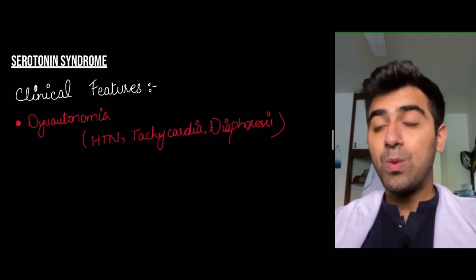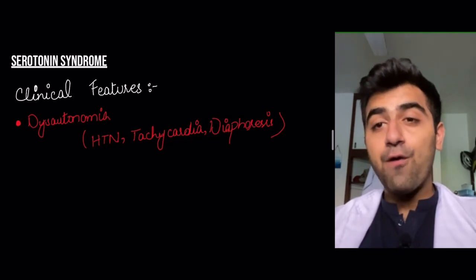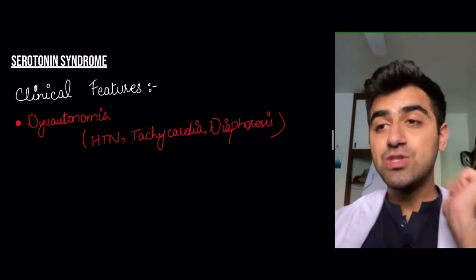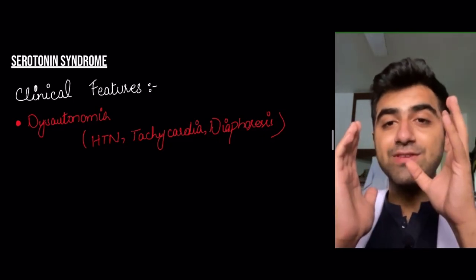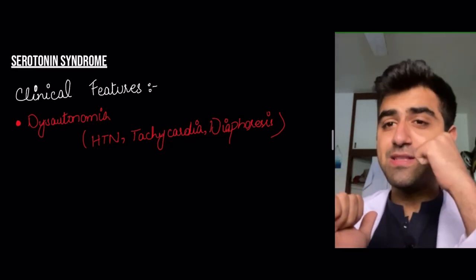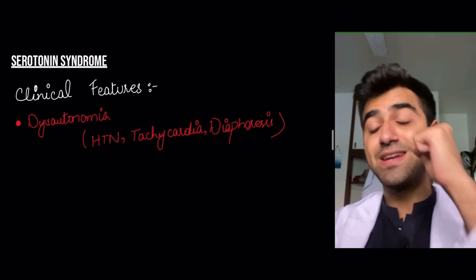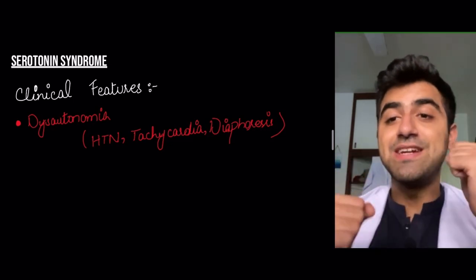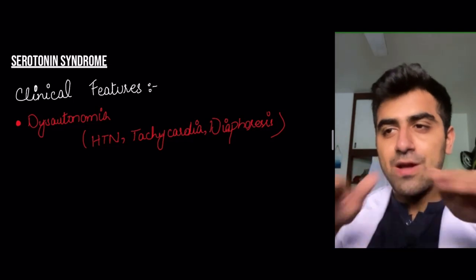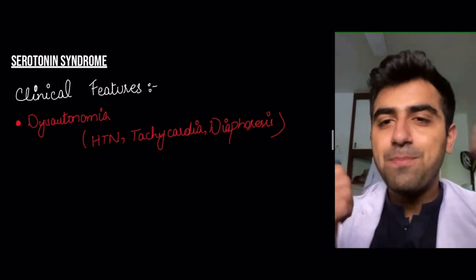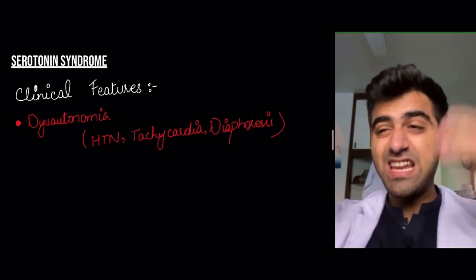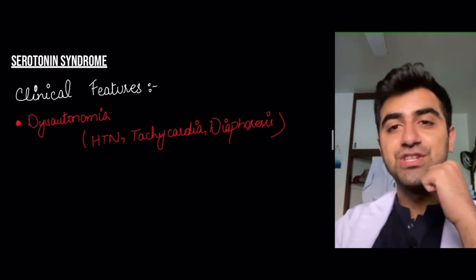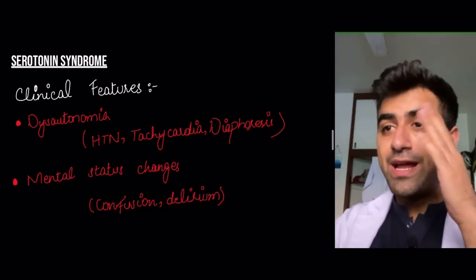Clinical features of serotonin syndrome include dysautonomia — aberrant activity of the autonomic nervous system, which is the balance between the sympathetic and parasympathetic nervous systems. The sympathetic system drives fight-or-flight responses: increased blood pressure, heart rate, and respiratory rate. Disrupting this balance results in hypertension, tachycardia, and diaphoresis — profuse sweating.